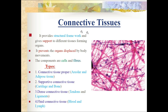Connective tissue is the next type after epithelial tissue. It provides a structural framework and gives support to different tissues forming the organs. It maintains the permanent structure of organs and prevents organs from being displaced by body movements. The components of connective tissue are cells and fibers.